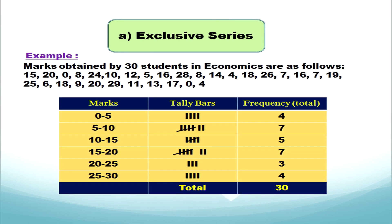The question asks: marks obtained by 30 students in economics are as follows. We take a class interval gap of 5 since there are 30 students. We first construct the classes: 0 to 5, 5 to 10, 10 to 15, 15 to 20, 20 to 25, 25 to 30, since the data values range from 0 to 29. The upper limit of each class becomes the lower limit of the next, and the gap remains 5 throughout.